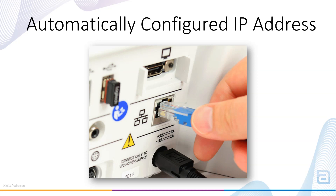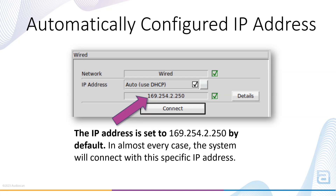For users with a new AudioScan device or a device that is not yet connected to a network, the connection will be established automatically upon connecting an Ethernet cable. For a new Verifit 2 or Axiom, plug in the Ethernet cable to the equipment and the PC and power on the device, or with the AudioScan already powered on, connect the Ethernet to the computer and to the Ethernet jack on the Verifit 2 or Axiom. The IP address will automatically configure. By default, the IP address is 169.254.2.250. Only in very rare instances when the PC has been assigned this exact address will the IP address configure differently.